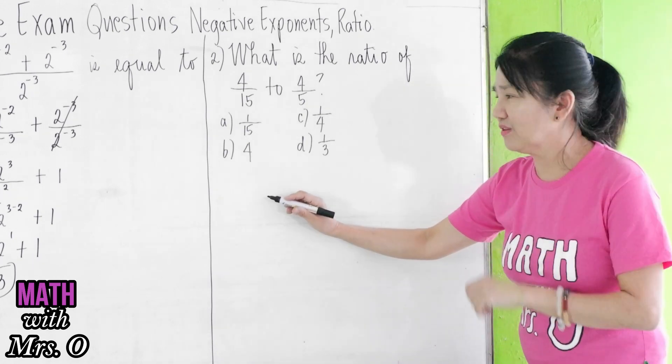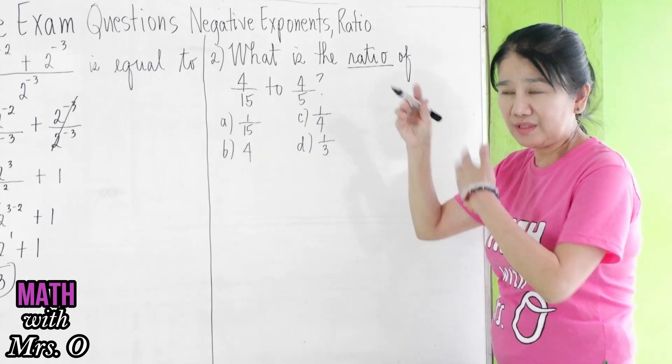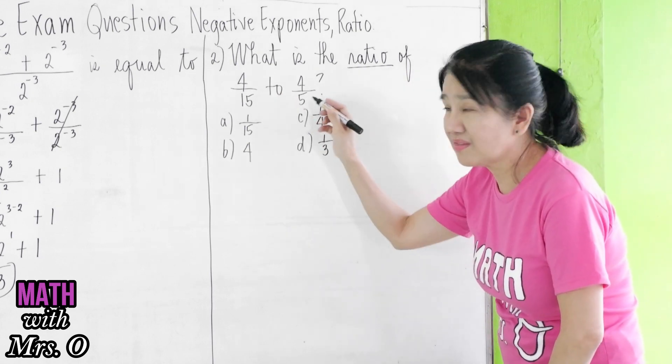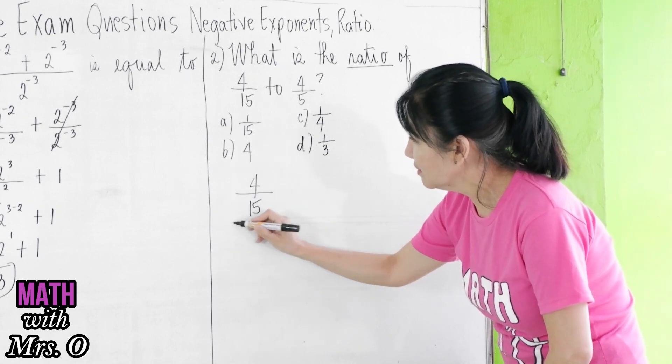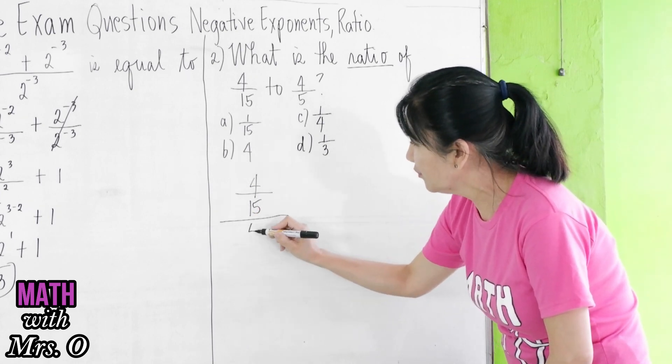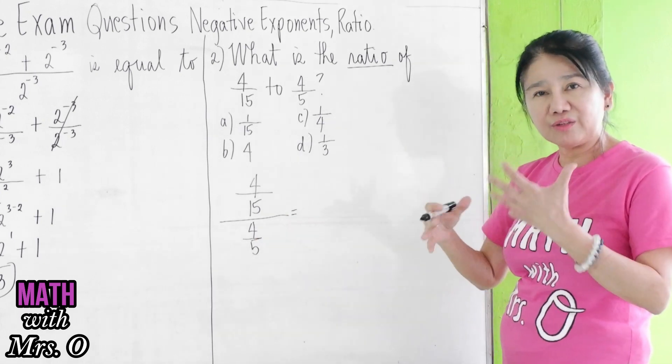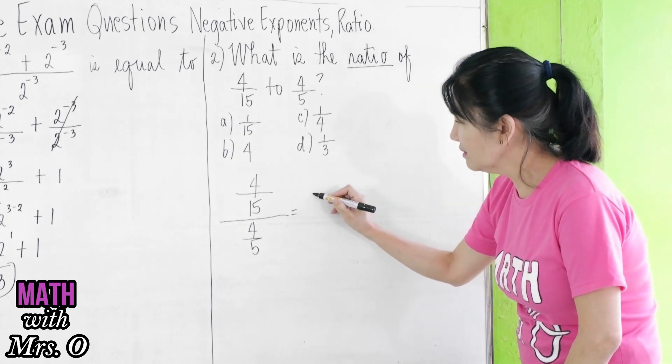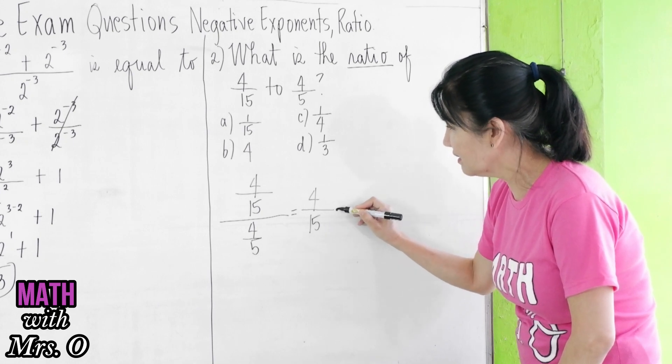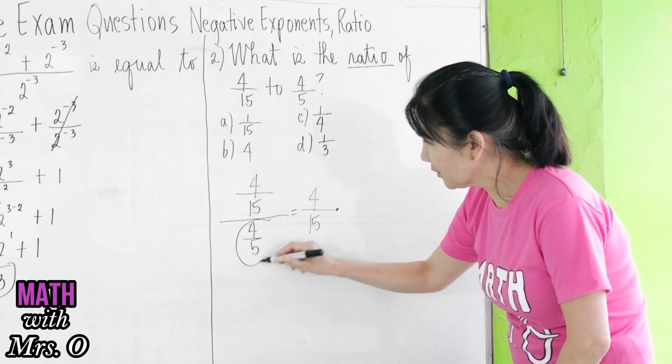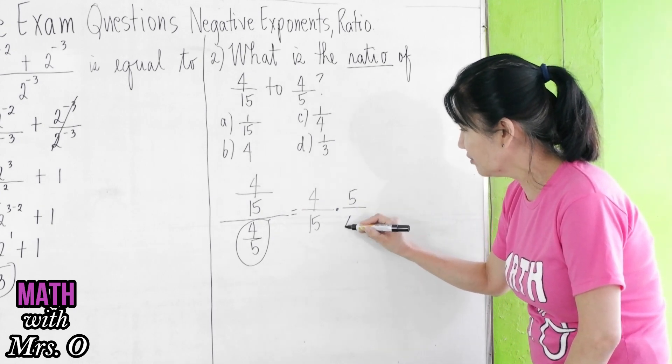So, this is how you solve this. This involves ratio and you know that ratio is just all over. So, we can write this as 4 over 15 all over 4 over 5. Now, from here, how do you divide fractions?